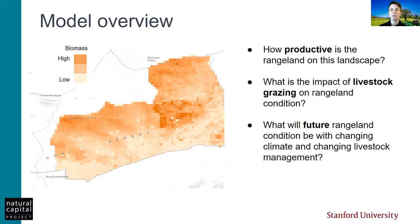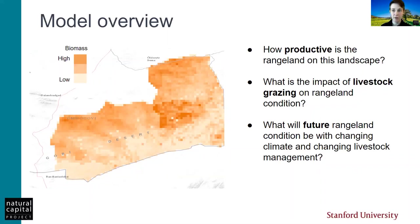This model can help explore questions like these. Like all models developed by the Natural Capital Project, we break down those complex interacting drivers into simplified relationships. The model can be used to study questions like how productive is the rangeland on this landscape, what is the impact of domestic livestock grazing on rangeland condition, and what is the impact of rangeland condition and productivity on livestock. The model can also be used for scenario analysis — what will future rangeland condition and animal condition be with changing climate and changing livestock management?